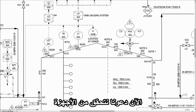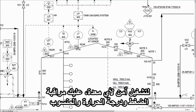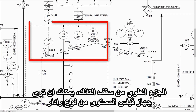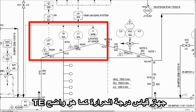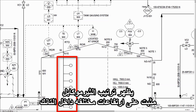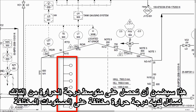Now let's check the instrumentation. For safe operation of any equipment, you have to monitor pressure, temperature, and level. Here you can see the pressure transmitter near the tank bottom plate. On the top of the roof, you can see the radar type level indicator and transmitter. The temperature gauge is shown as TE, which is the temperature element. This arrangement shows multiple thermocouples installed at different heights of the tank. This ensures you get an average temperature of the tank, as the liquid has a different temperature at different levels.